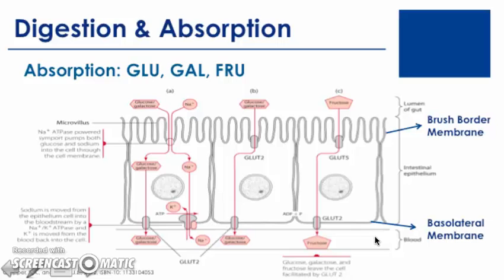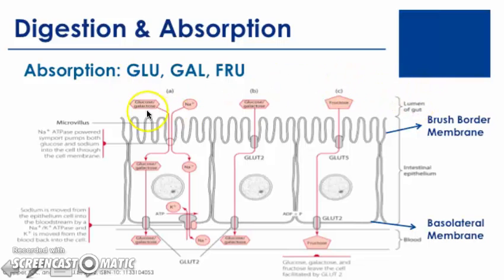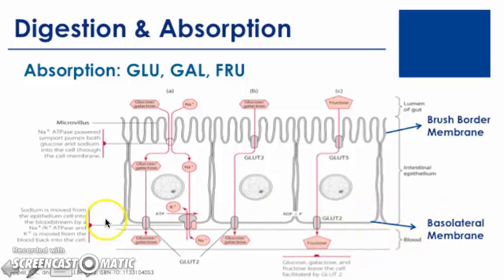In this diagram of carbohydrate absorption, we see three intestinal cells. On the intestinal cells, we have the brush border membrane of the small intestine, which contacts the lumen of the gut — where digested food products are present prior to absorption. The intestinal cell, also known as the enterocyte, has the brush border membrane on one side. Once food components are absorbed into the enterocyte, they exit through the second membrane — the basal lateral membrane — which contacts the blood.